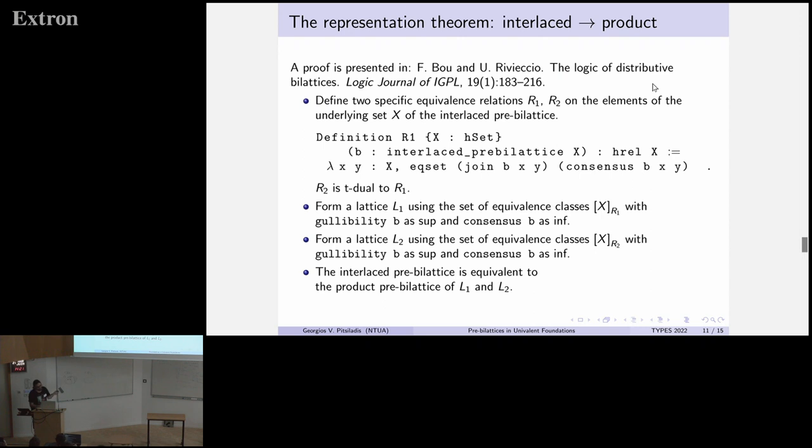The proof goes like this. You define two equivalence relations, which in fact encode the thing that I was talking about, the lines that go diagonally. The first relation says that the two elements are in such a line from top left to bottom right. And the second is the symmetric one. You then take the equivalence classes, form lattices using them, and take the product. Mathematically, it's very easy. And most of this happens by hand-waving.